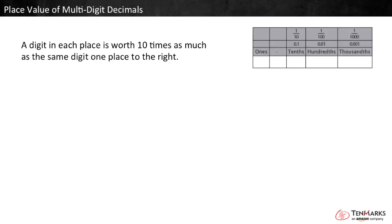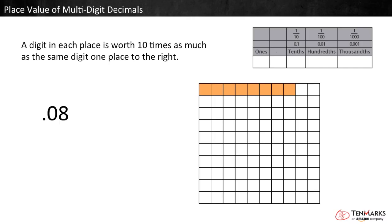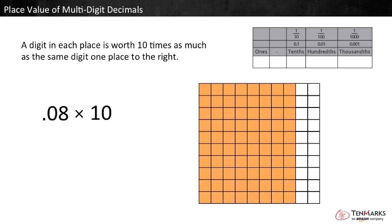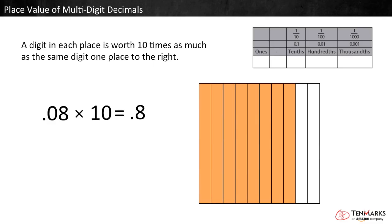A digit in each place is worth ten times as much as the same digit one place to the right. For example, look at eight hundredths. If each of the eight hundredths is multiplied by ten, the result is eighty hundredths, or eight tenths. So eight tenths is ten times as large as eight hundredths.